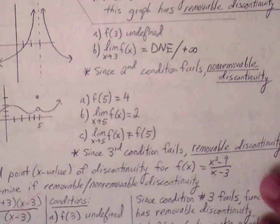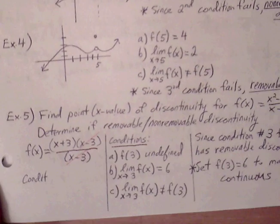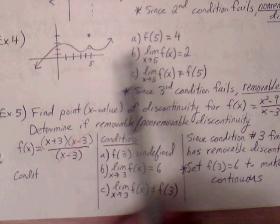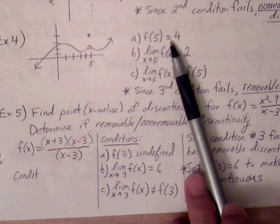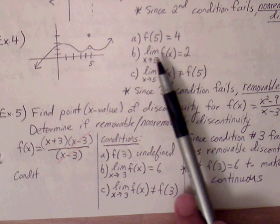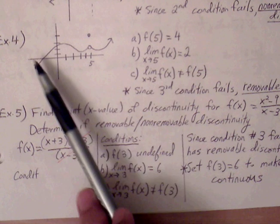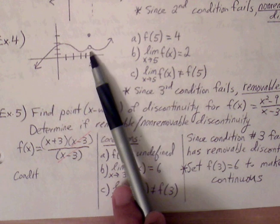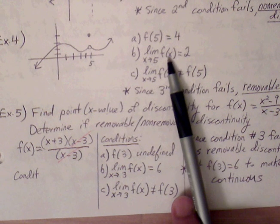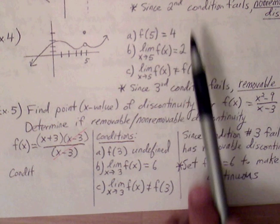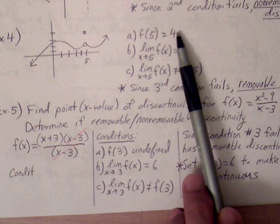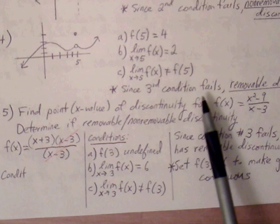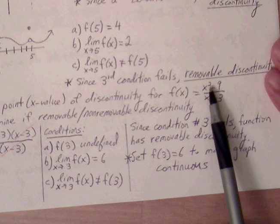Example 4: target x value is at 5. f of 5 equals 4, so the first condition passes. The limit as x approaches 5 — the left branch approaches y equals 2 and the right branch approaches y equals 2 — they agree, so the second condition passes. However, the third condition fails because the ordered pair exists at 4 but the limit exists at 2. Therefore, removable discontinuity.